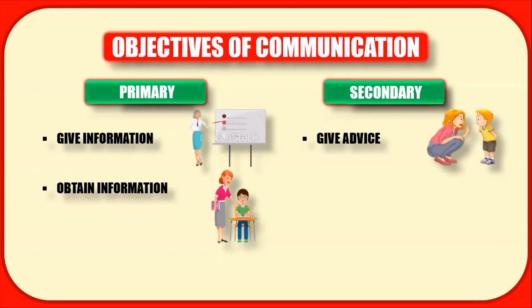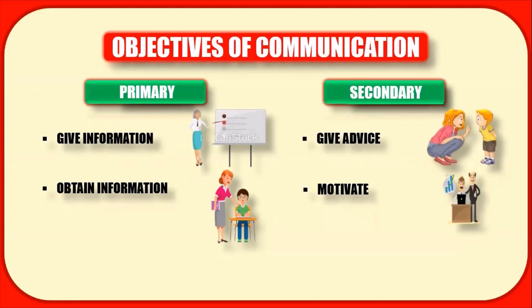The second secondary objective is to motivate — to give an incentive to someone so that they are encouraged to go ahead with that particular work. For example, if I want to develop the reading habit of my child, I can gift him a storybook that will instill a desire in him to read and make him enthusiastic, thus improving his reading habit.